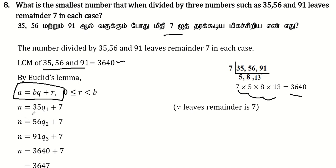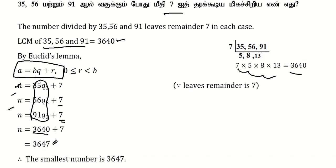Let's take a number. If you divide the number, the remainder is 7 each time. The LCM is 660, so the number equals 660 plus 7. Therefore, the smallest number is 660 plus 7.